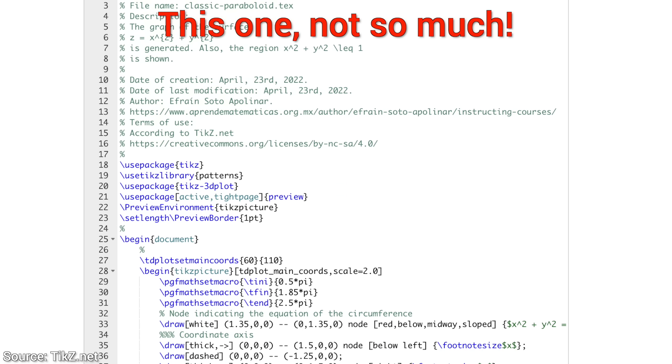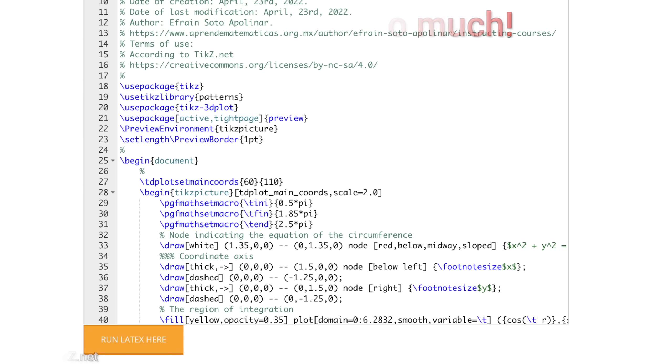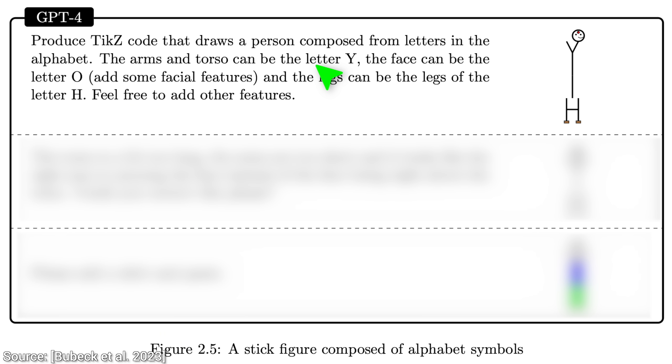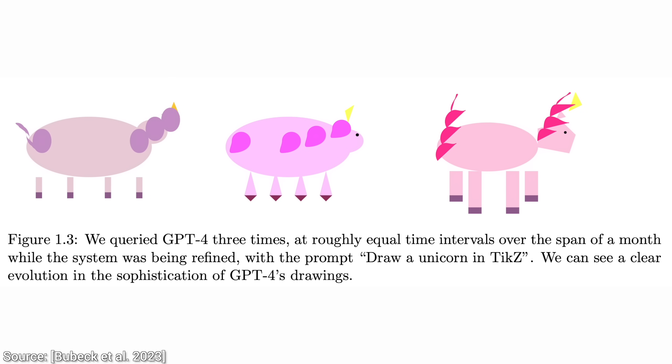If only we had an AI that could do all this for us! You know what? Let's try it! Let's ask it to write the code for a little person built from the letters of the alphabet. This is not bad, but we can ask for some improvements. Yes, and then add some shirt and pants, and there we go! Great job! Or we can ask for a unicorn as well. And here, we find something super interesting.